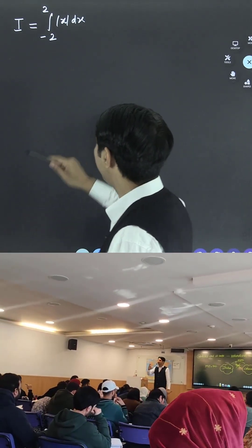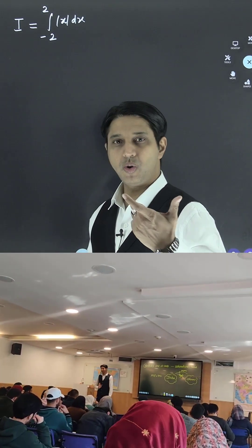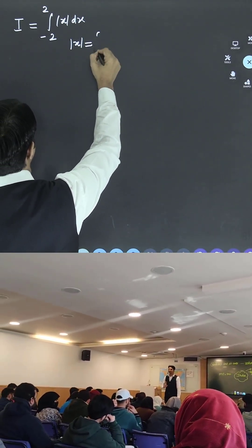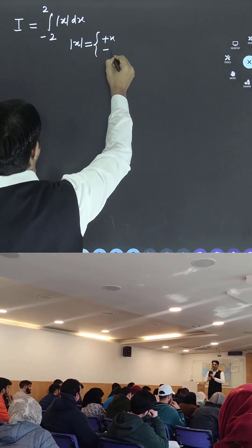One integral is given to us: integration from minus 2 to plus 2 of mod of x dx. Now you know very well if I open this mod of x, one value is positive, one value is negative.